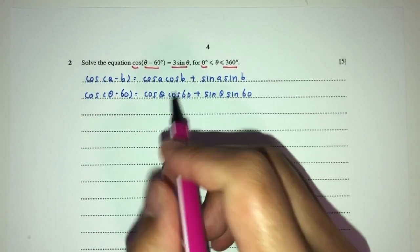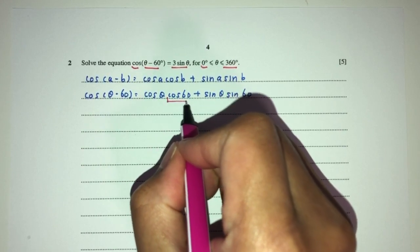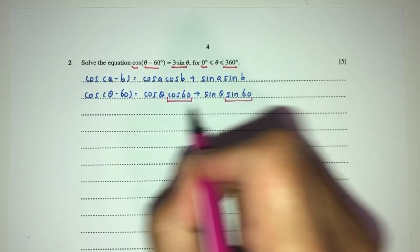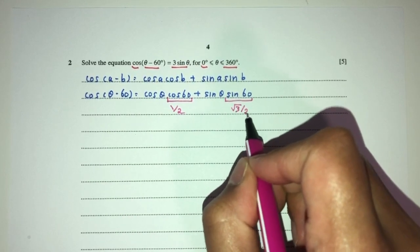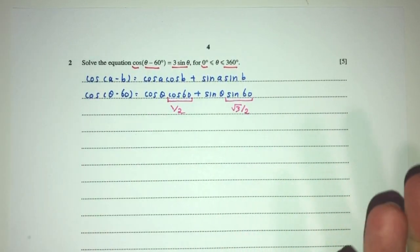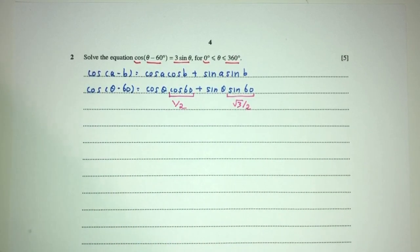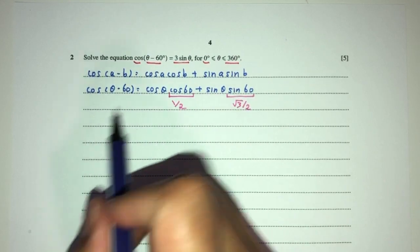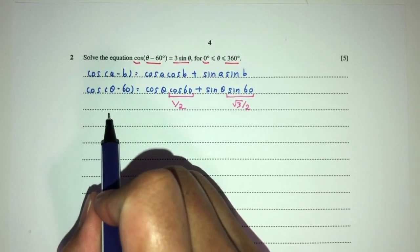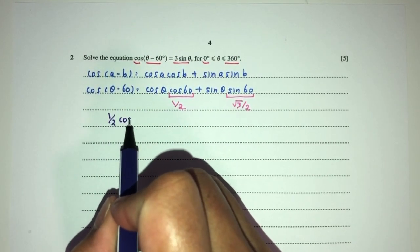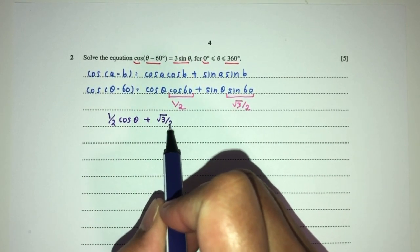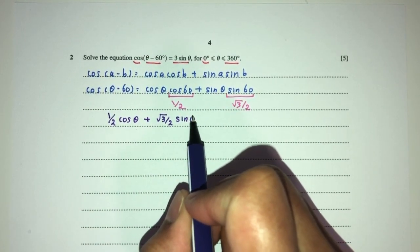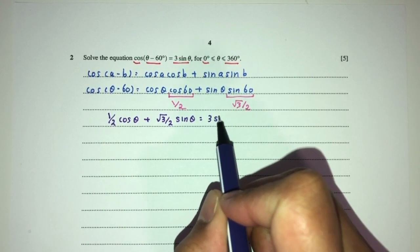For angles of 60, 30, and 45, or their multiples, we use exact values. cos60 = 1/2 and sin60 = √3/2. If you don't know these, use your calculator. So we get: (1/2)cosθ + (√3/2)sinθ = 3sinθ.